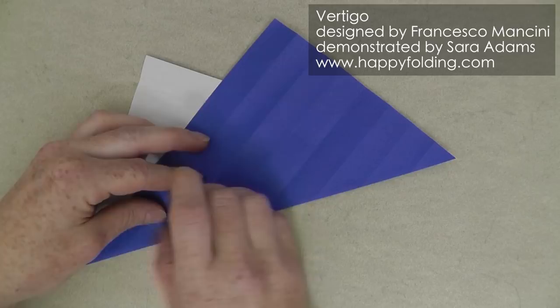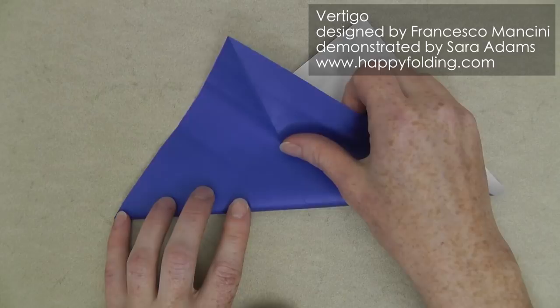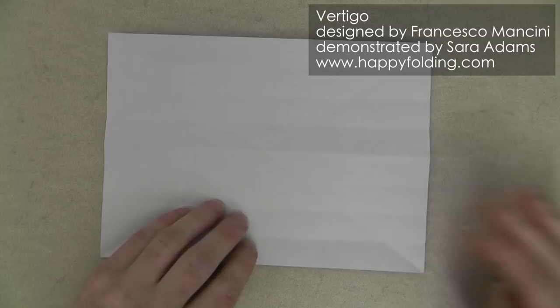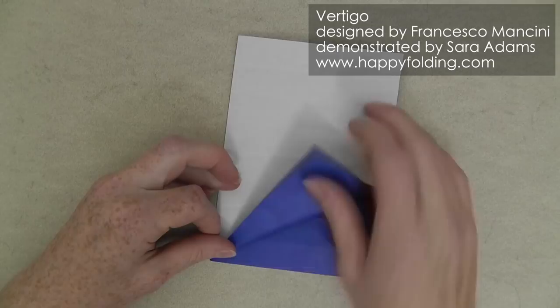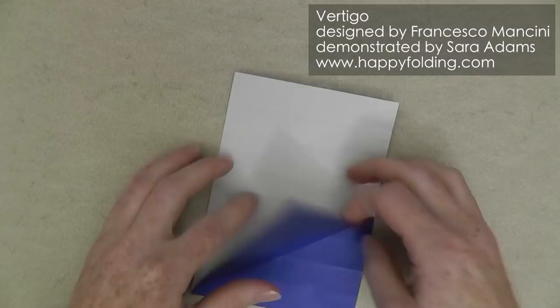Unfold, and repeat in the other direction. Unfold, and now also add the diagonal right here. For this, you can again bring this fold in, so that it's easier to get a nice, precise result. Repeat on the other corners.